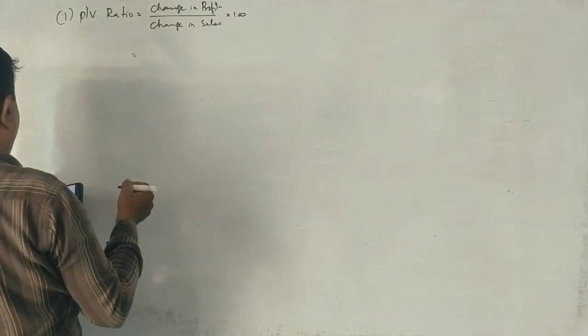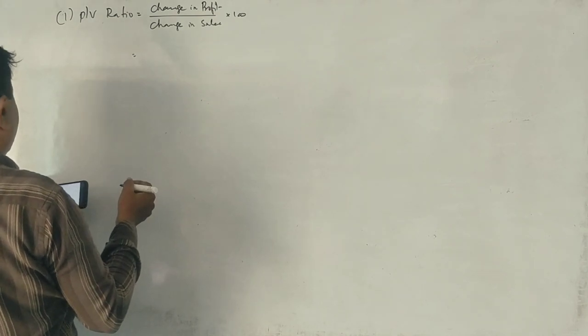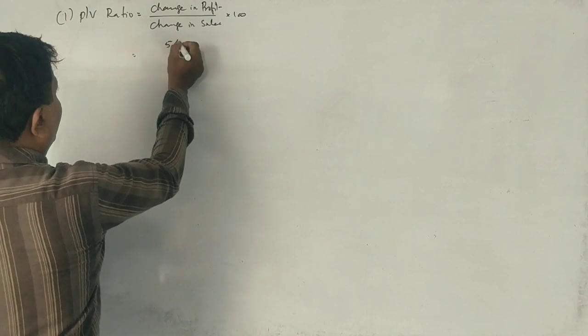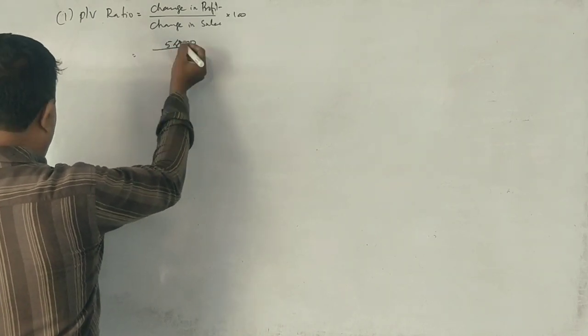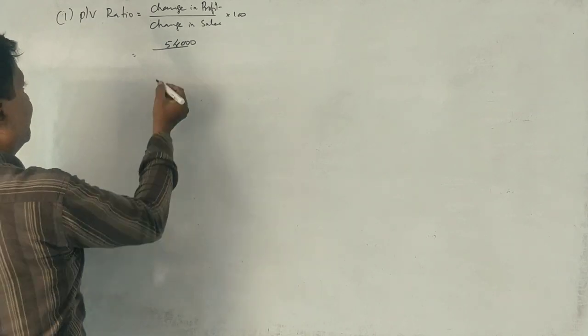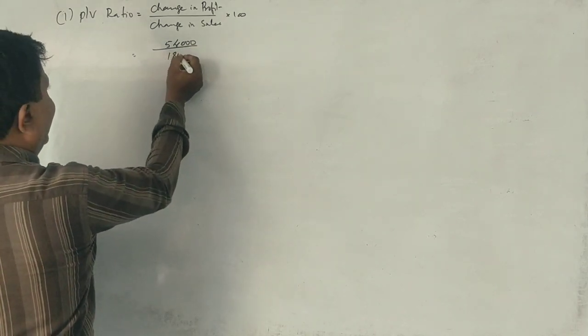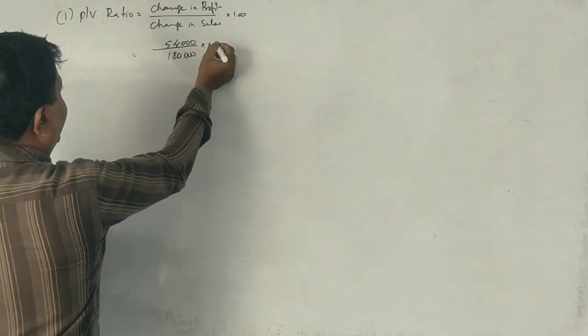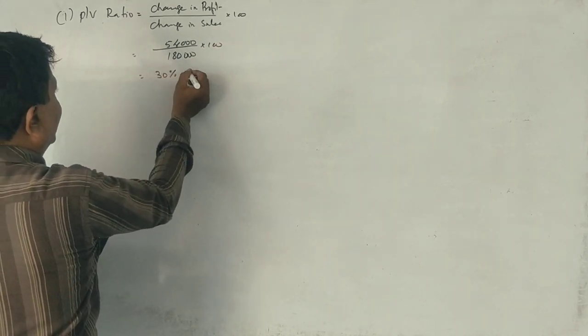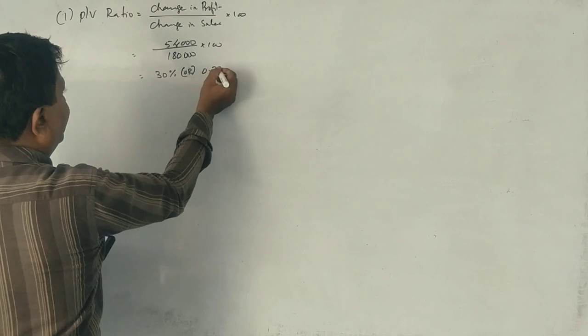Difference of profit: 90,000 minus 36,000 equals 54,000. Again 18,00,000 minus 16,20,000 is 1,80,000. Into 100 gives 30%, 0.30.